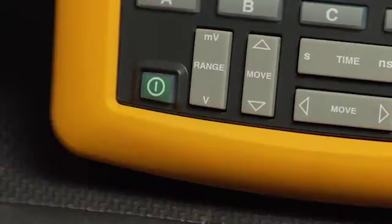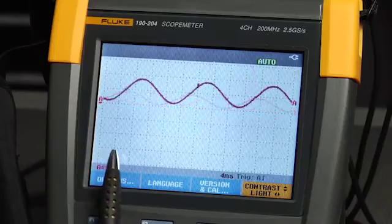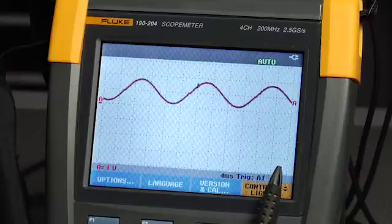Turning it on, you'll notice the large LCD screen shows 12 divisions, two more than the average scope.